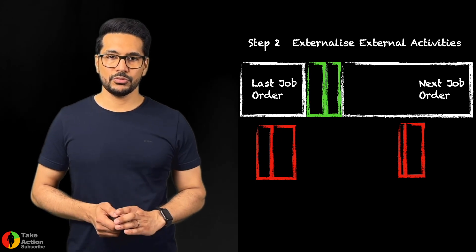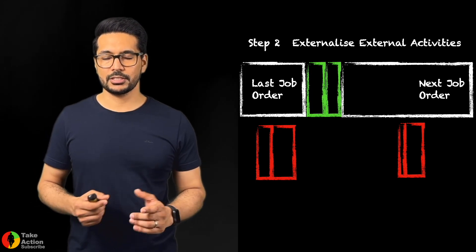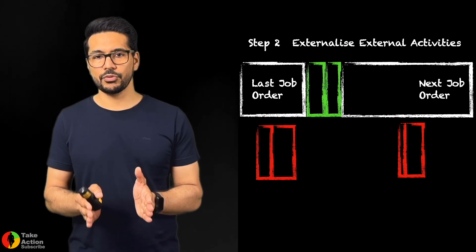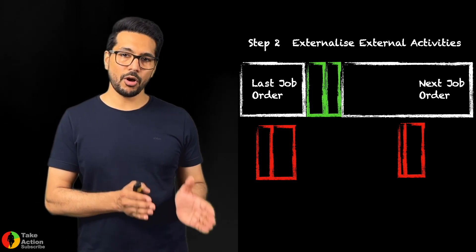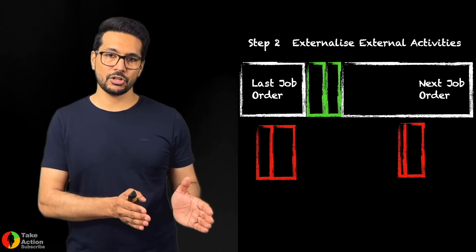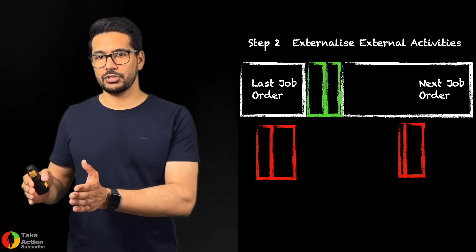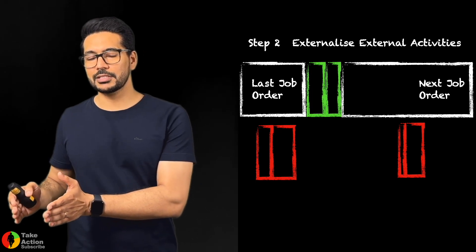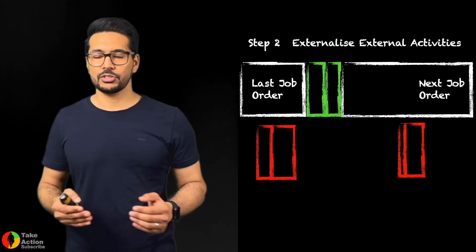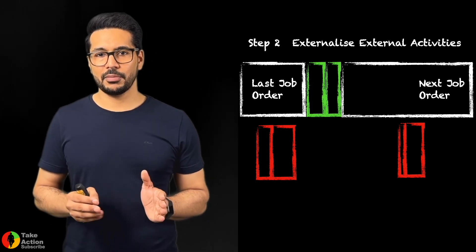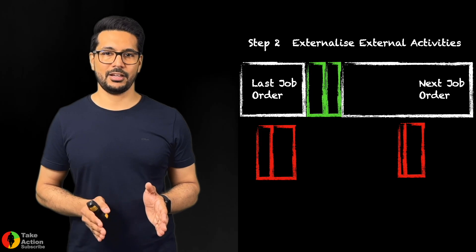We do these entries when the machine is running with the next job order. Step number two was to externalize all the activity either before the machine is being stopped when the previous job order is running, or after the next job order has already been started on the machine after the setup. Through this, now the setup time is only comprised of internal activities.